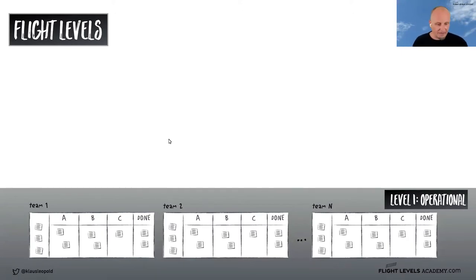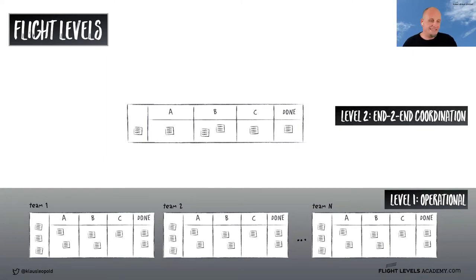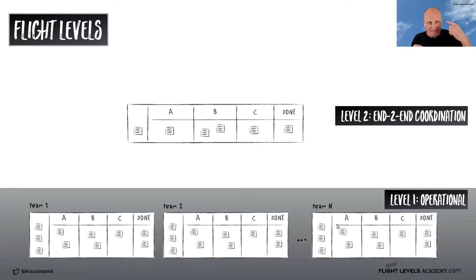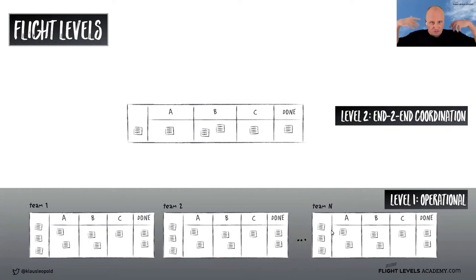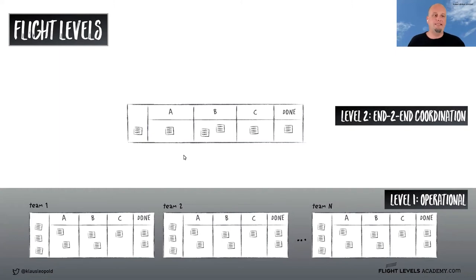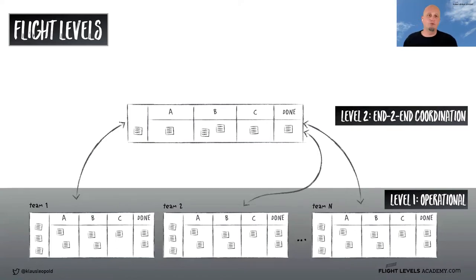Usually an organization has more than only one team, so we will see multiple flight level one systems. Most of the time, one team alone cannot deliver value to the market — we need multiple teams collaborating to generate value. Business agility is about acting agile on the market, and this is exactly where flight level two kicks in. Flight level two is end-to-end coordination: on this level, we make sure that the right team is working on the right stuff at the right time.